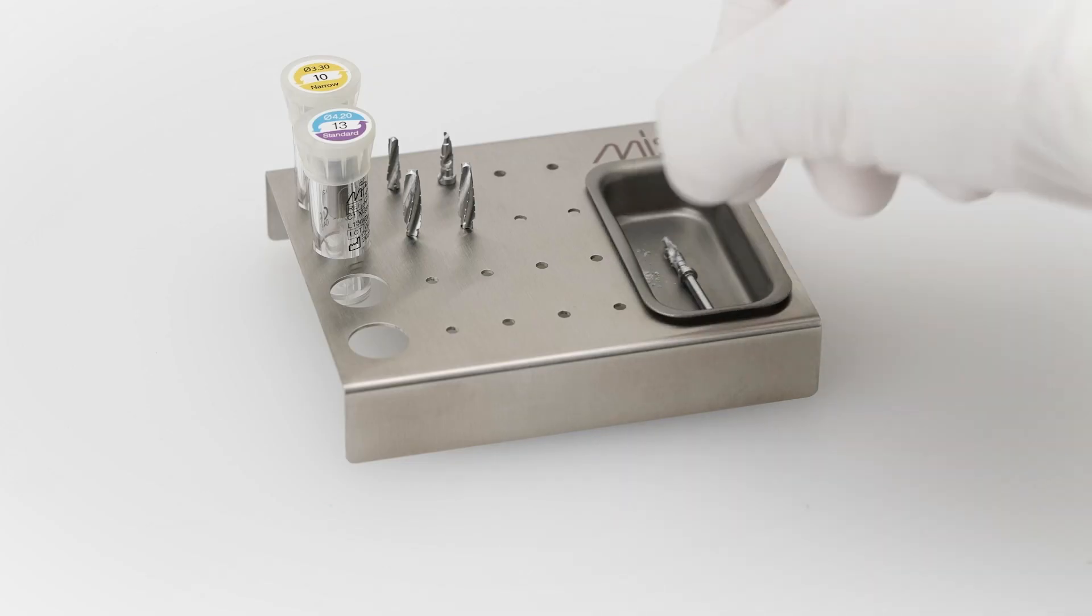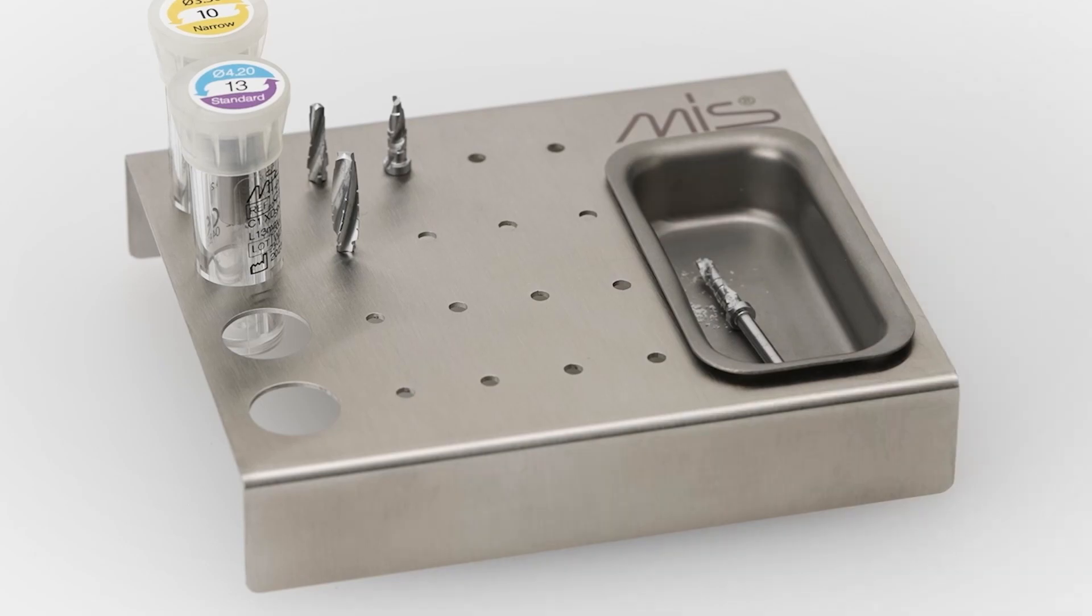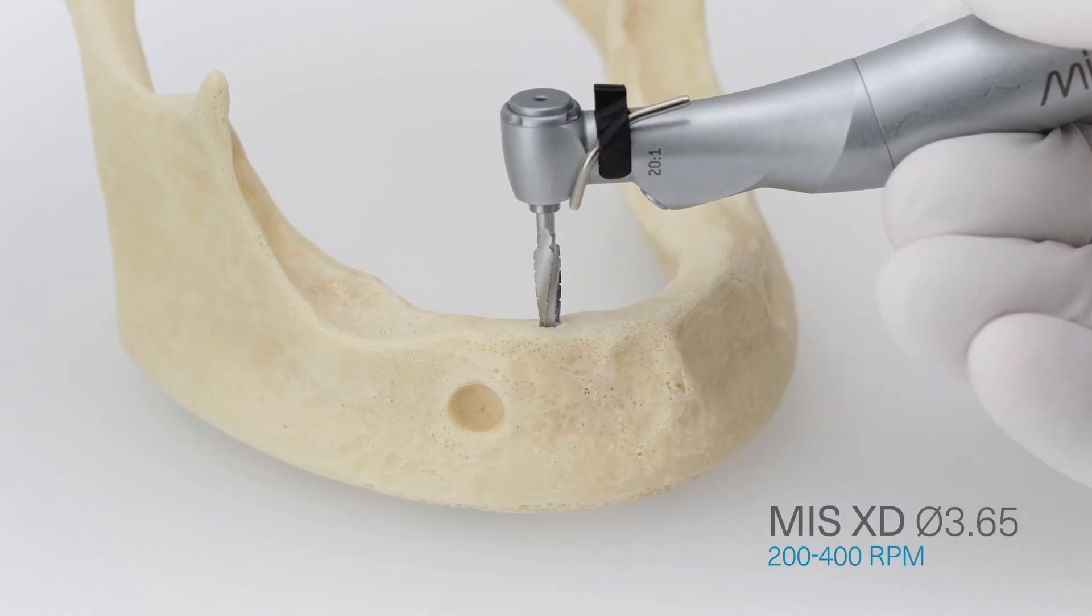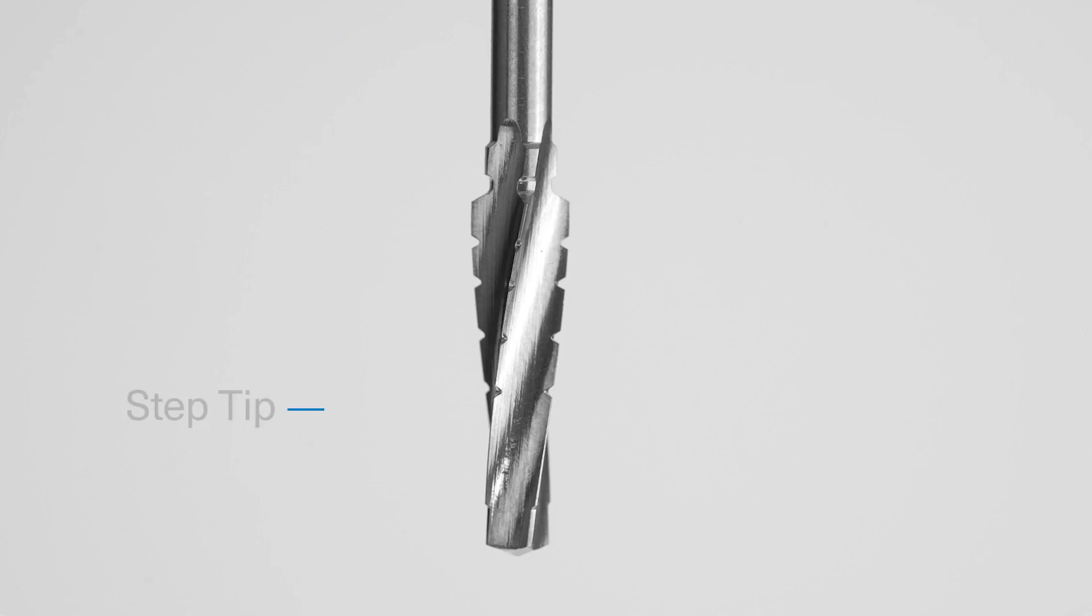The next step is using the XD 3.65 diameter procedure drill. XD drills feature a step tip that positions the drill precisely at the osteotomy, providing a more accurate drilling process overall.